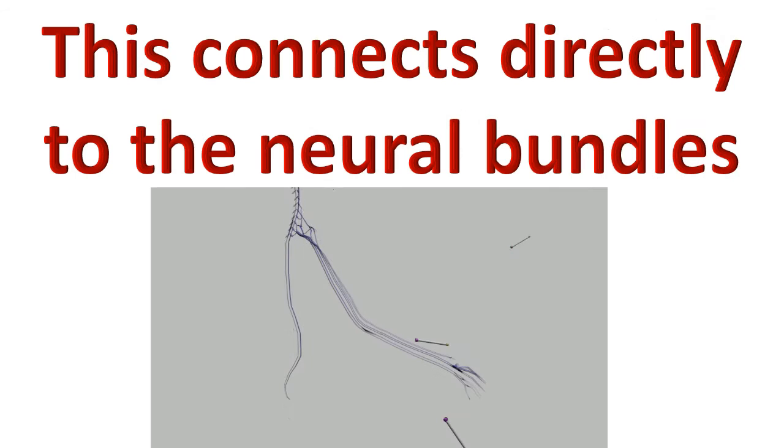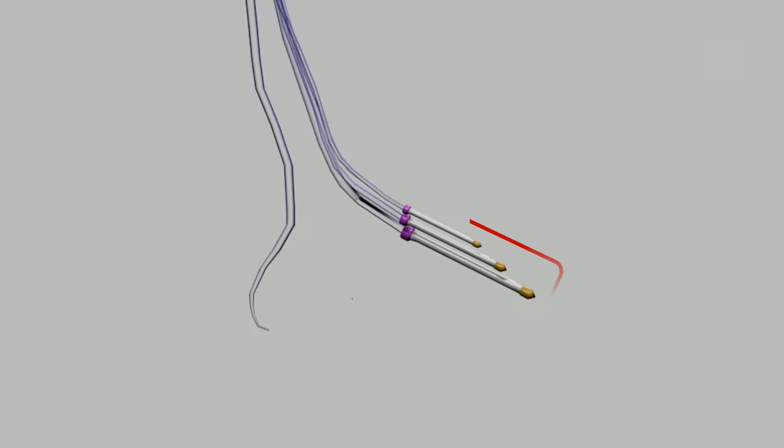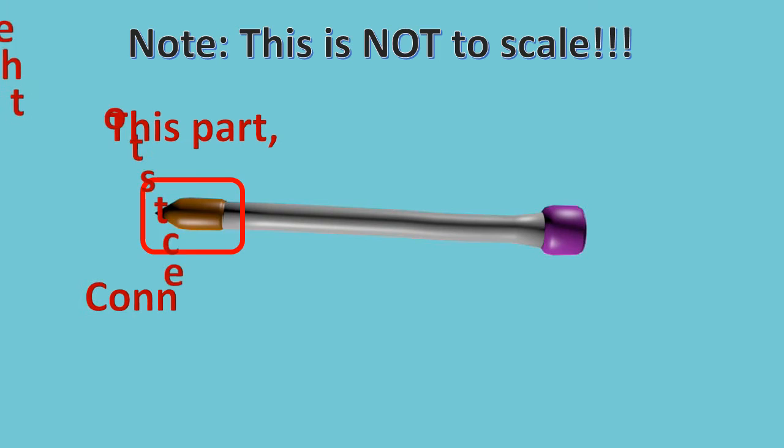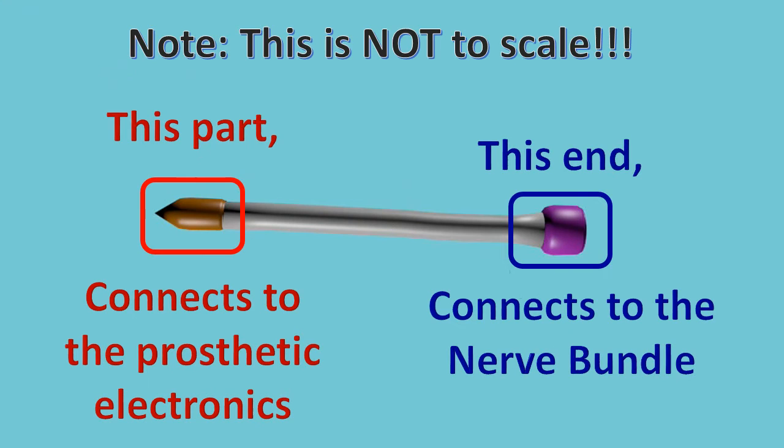Here's a closer look at the concept of these two-way neural interface units. We will need to go into a little more detail about the inner workings of this technology, above and beyond the high-level concepts. As we go over the workings of this device, please keep in mind these images are not to scale. Now, this copper-colored part is what connects to the electronics of the prosthetic. This other purple end connects to the nerve bundle and is right where all the magic happens.